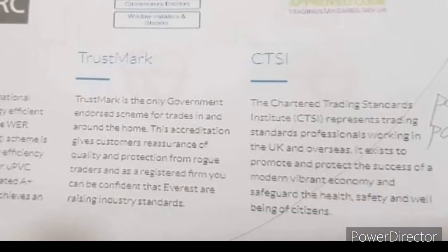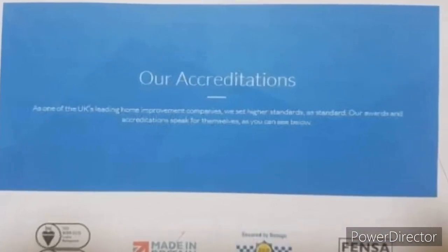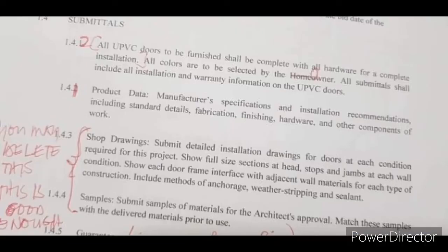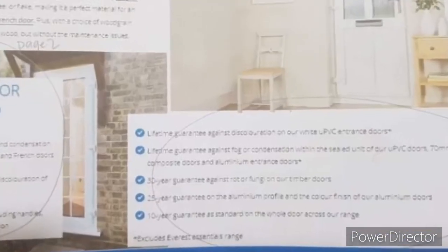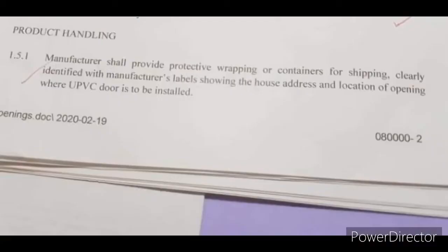Next is the submittals — this is where you will be stating the documents that the manufacturer will be presenting to you. As mentioned, these are the product data, shop drawings, samples, and warranties. Lastly, product handling — this is the area where you will indicate how they will deliver the item to you, how it will be stored on site, and the delivery schedule.